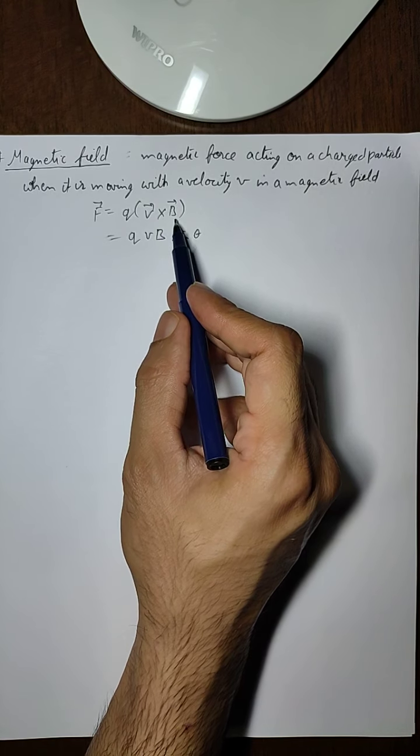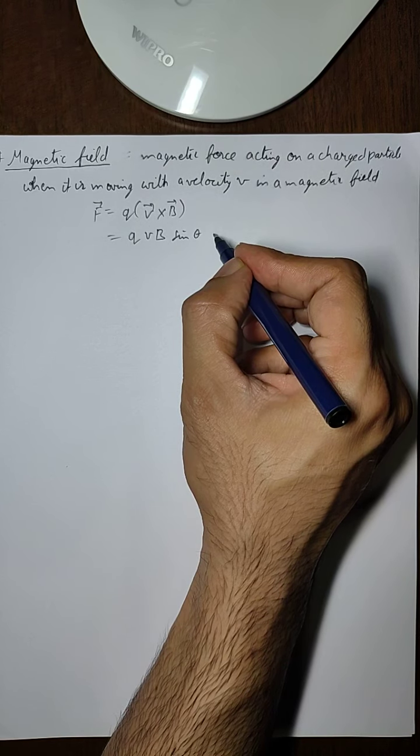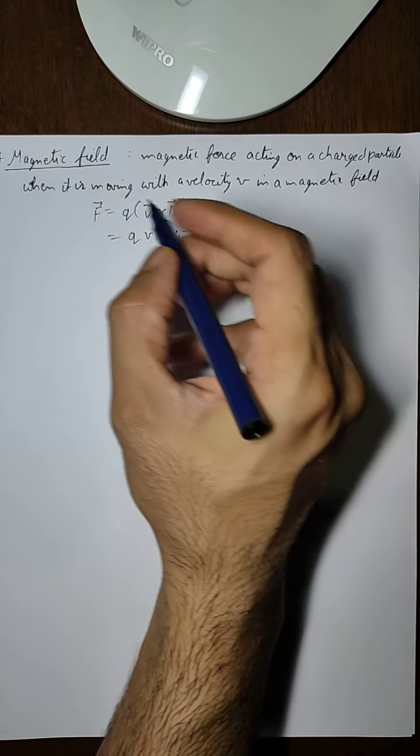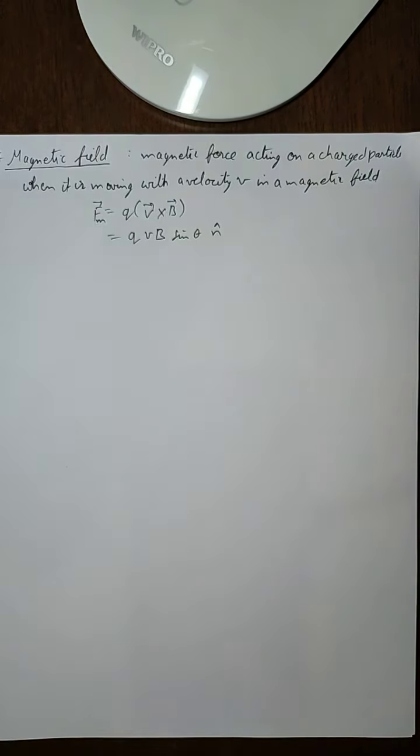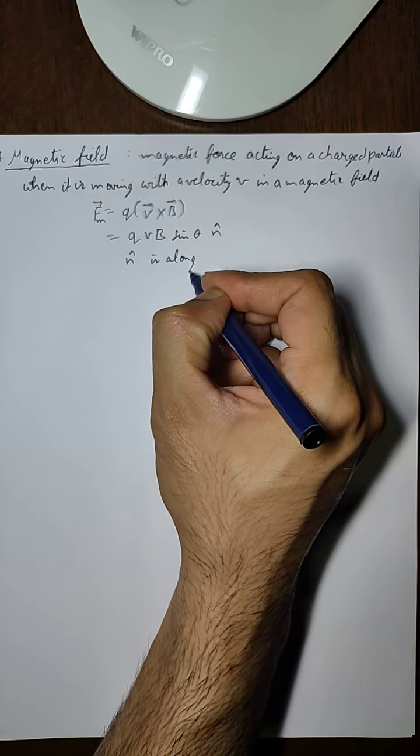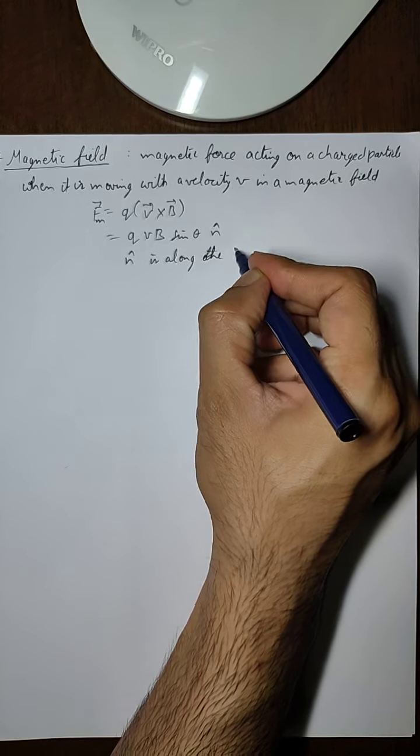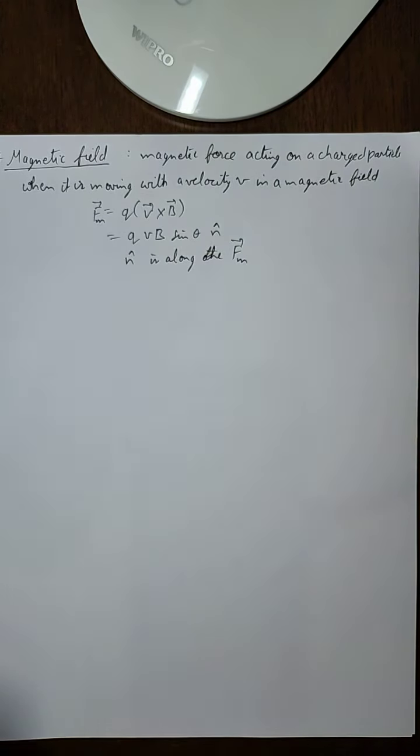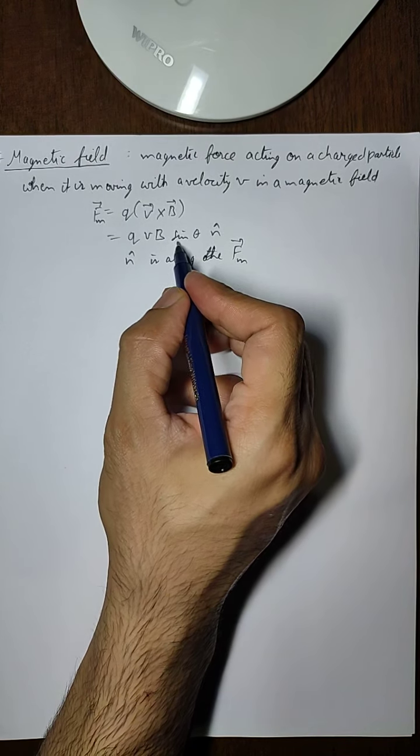But since V cross B is a vector quantity, this value should have a unit vector which gives the direction of this magnetic force. Let us denote this unit vector by n cap. So this unit vector n cap will give us the direction of force.